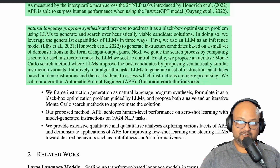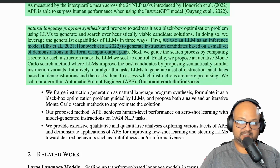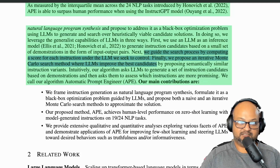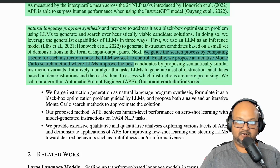So how do they do that exactly? They use the language model first of all to generate possible candidates, and they do that by giving it a few input-output pairs as examples. That gives you a prompt to start with. They then generate variations of that prompt again using a large language model, and then they score all those variations, which gives them a top candidate with the top score.